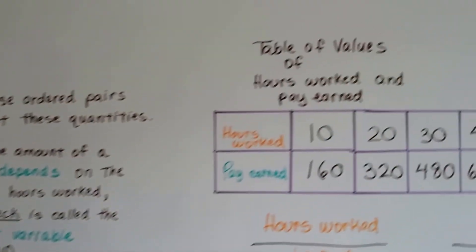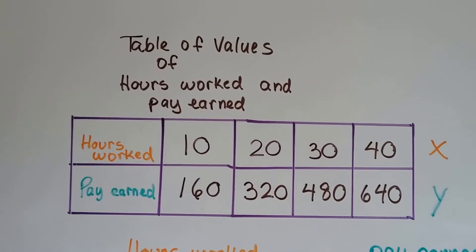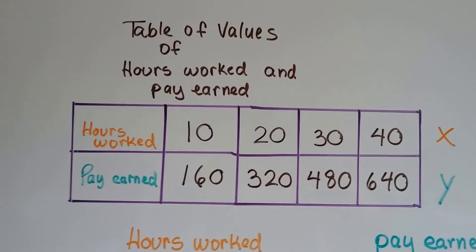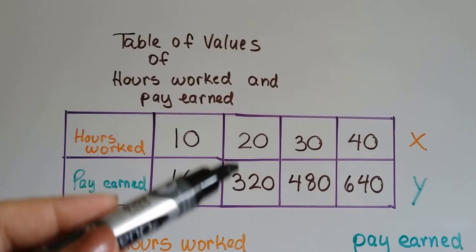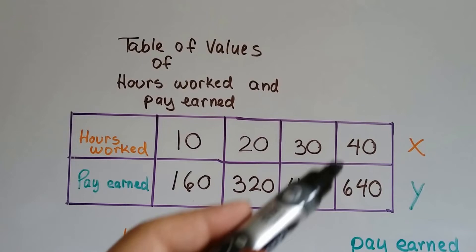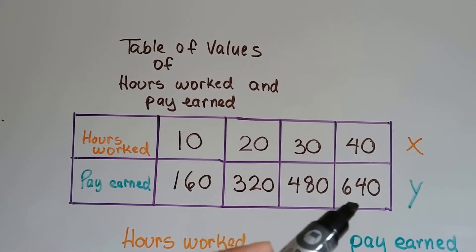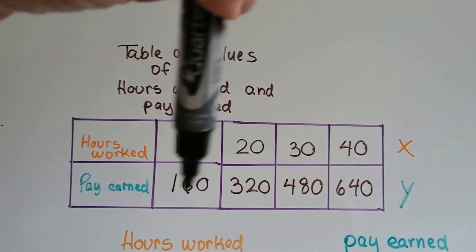So here we've got a table of values of hours worked and the pay that's earned. So if you worked 10 hours, they would get $160. If you worked 20 hours, it would be $320. 30 hours would be 480, or 40 hours would be 640. So this is the x variable, and this is the y variable.